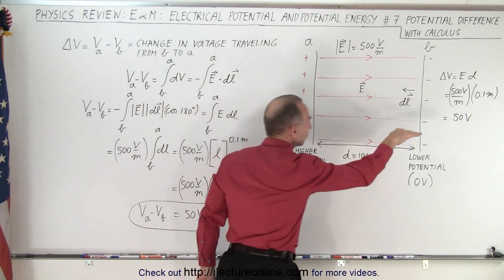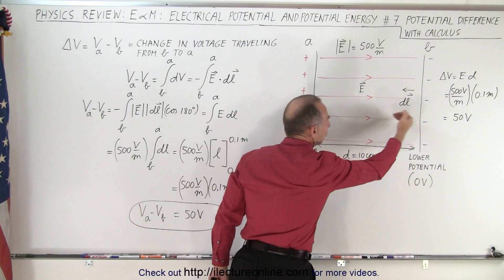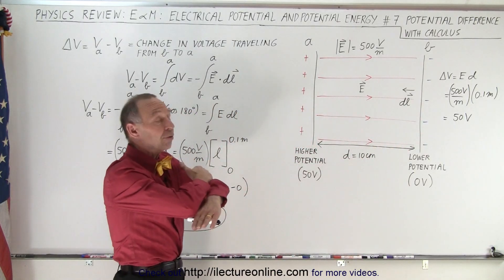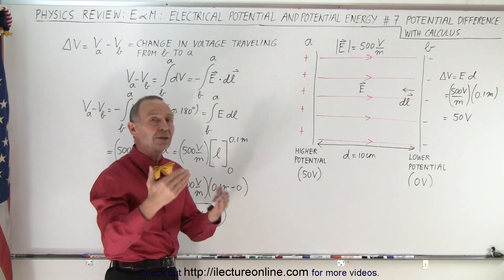Notice that the direction of E is to the right and the direction of DL is to the left. So they're in opposite directions, that means that the angle between the two is 180 degrees.